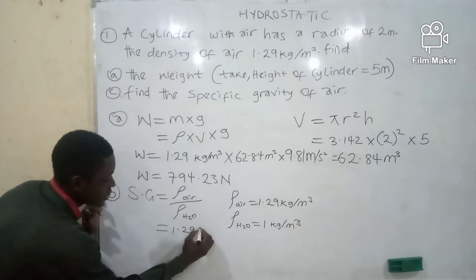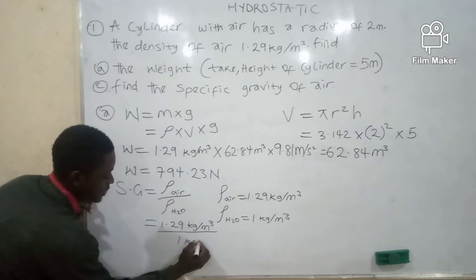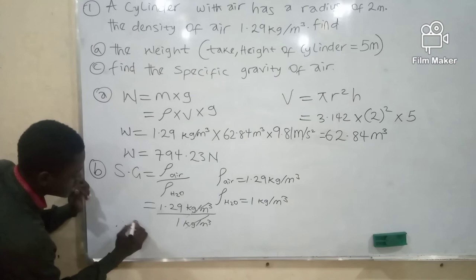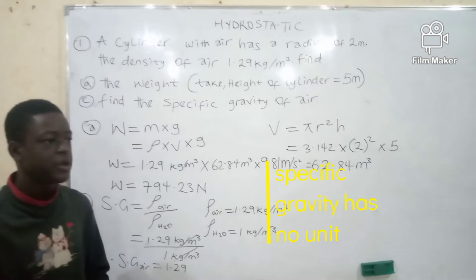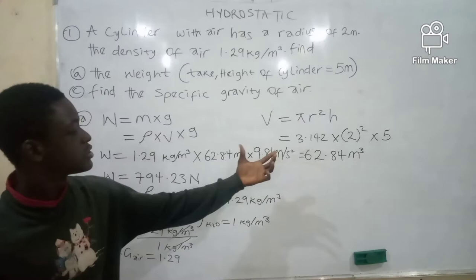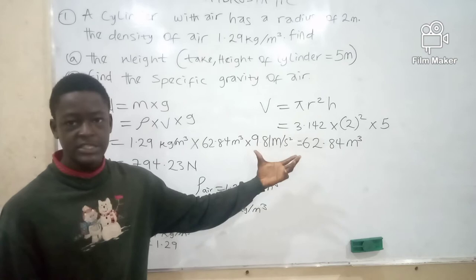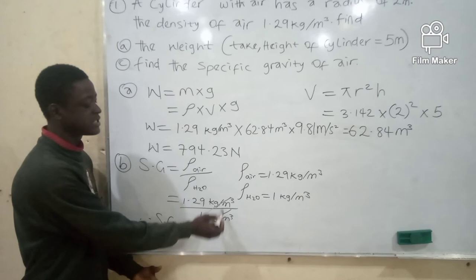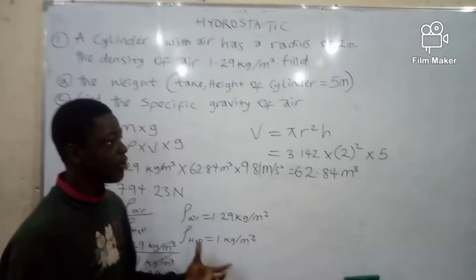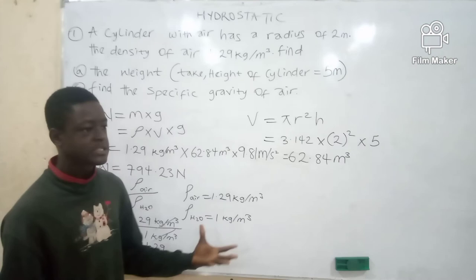We have 1.29 kg per meter cubed divided by 1 kg per meter cubed. The units cancel out. Therefore, the specific gravity of air is equal to 1.29. Since these units have cancelled each other, we don't have a unit. This is the difference between specific gravity and gravity. From our question, we used a unit for gravity—meters per second squared—which means gravity has dimensions. But specific gravity is dimensionless, because the units of both densities cancel out. This is how we solve for specific gravity and weight.